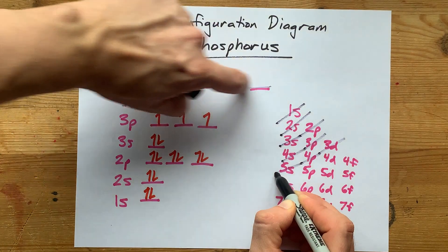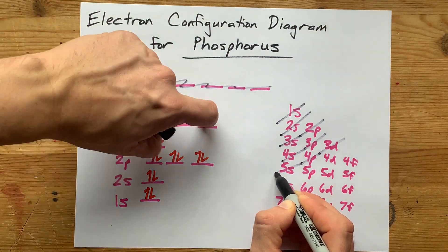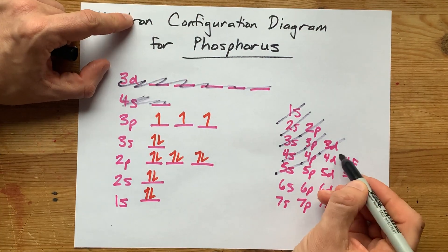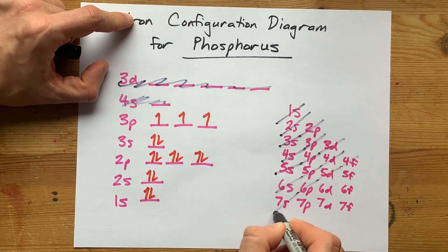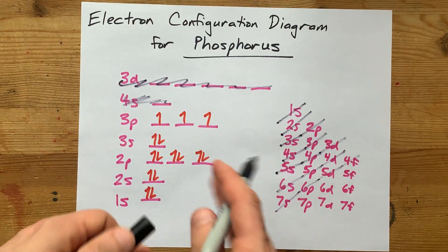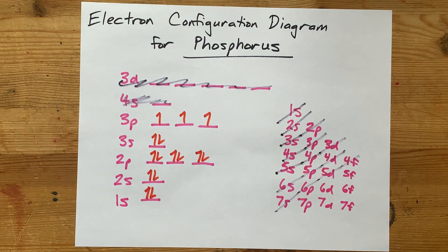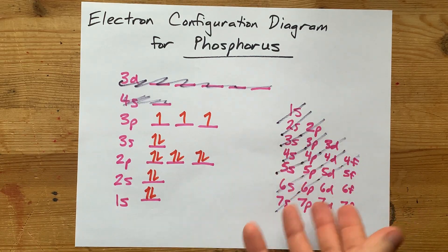Remember, the D's hold five slashes, the P's hold three, the S's hold one. 4d, 5p, 6s, 4f, 5d, 6p, 7s, etc. It's called the order of filling, and this is just how some people memorize it, okay?